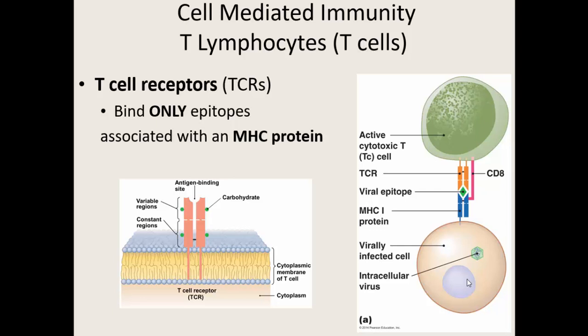T cells have T cell receptors but they don't have the arms — they kind of just look like the body without the arms. They can still bind to an antigen, but the difference is they cannot bind to the actual pathogen itself, whereas B cells can. Instead, the T cell receptor has to bind to an antigen or epitope that's associated with one of these MHC proteins. So here's a T cell with a T cell receptor, but it can't bind to the virus itself, mostly because the virus is inside of the cell.